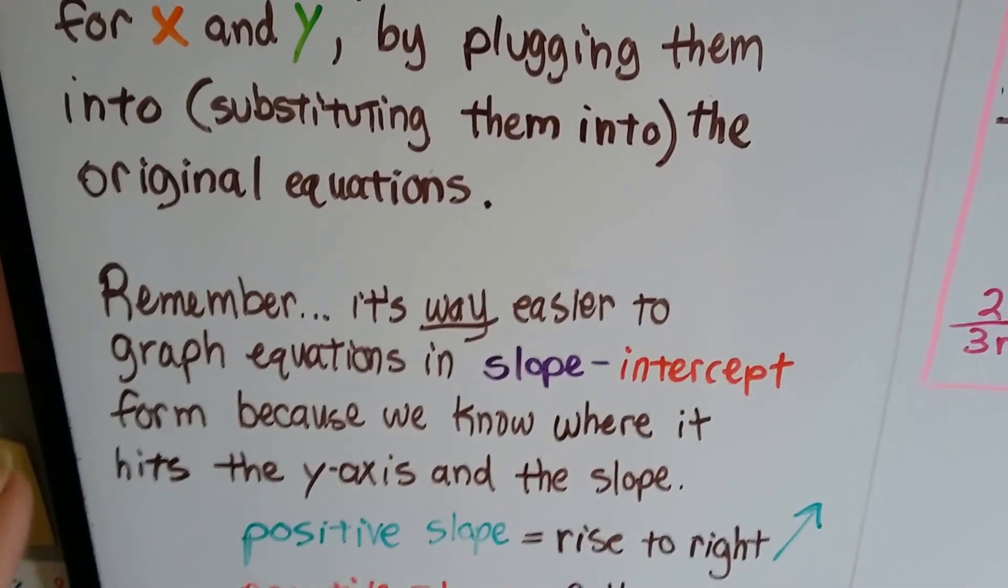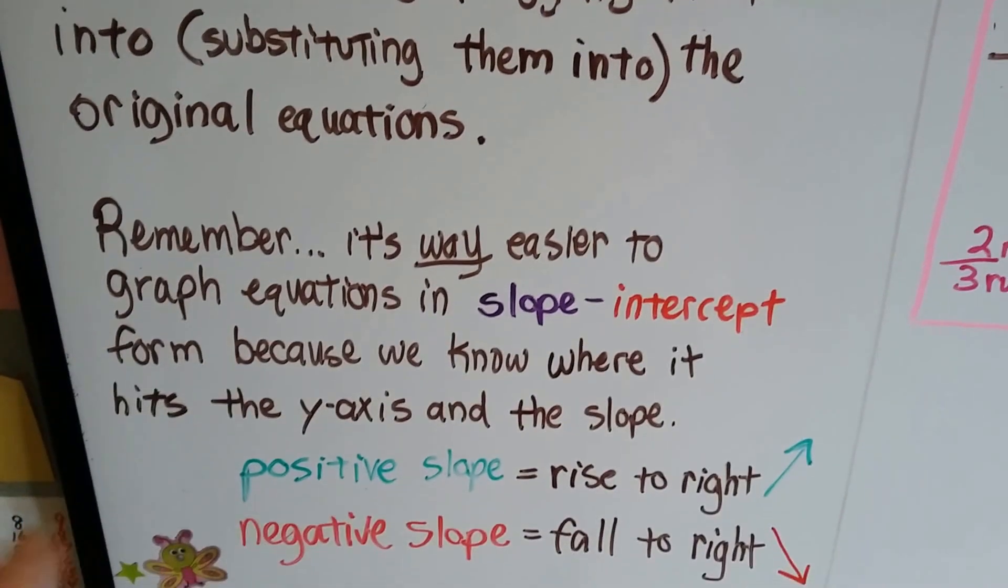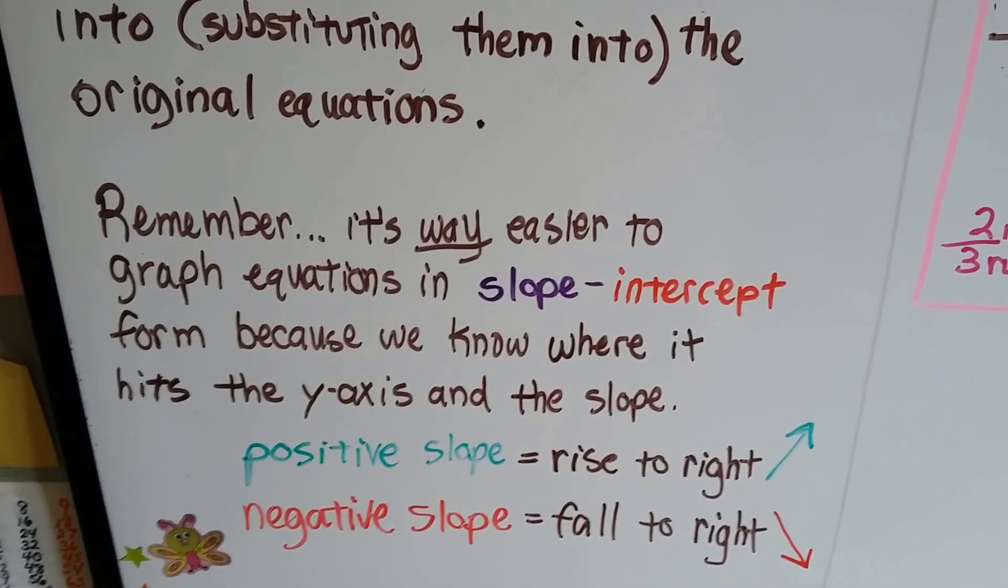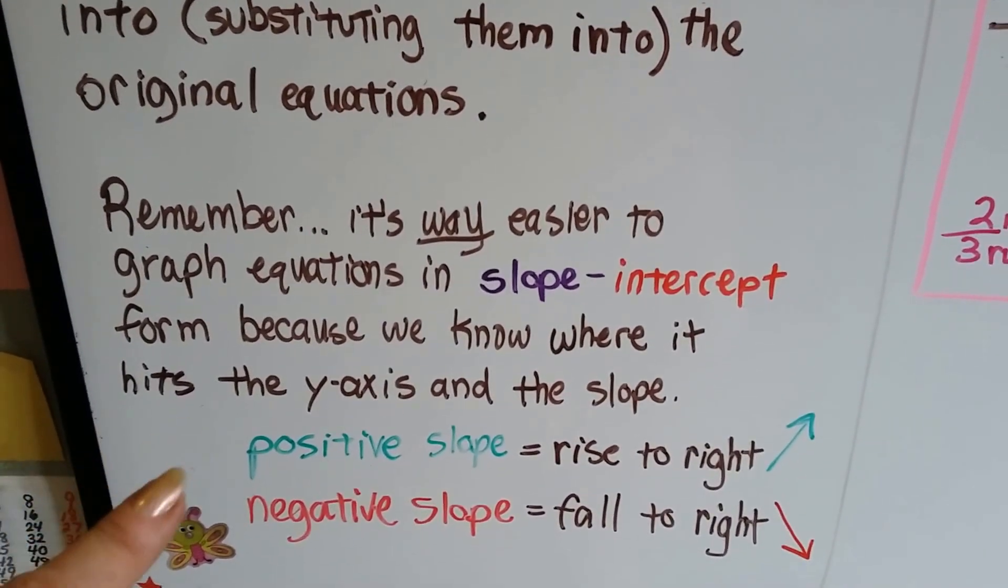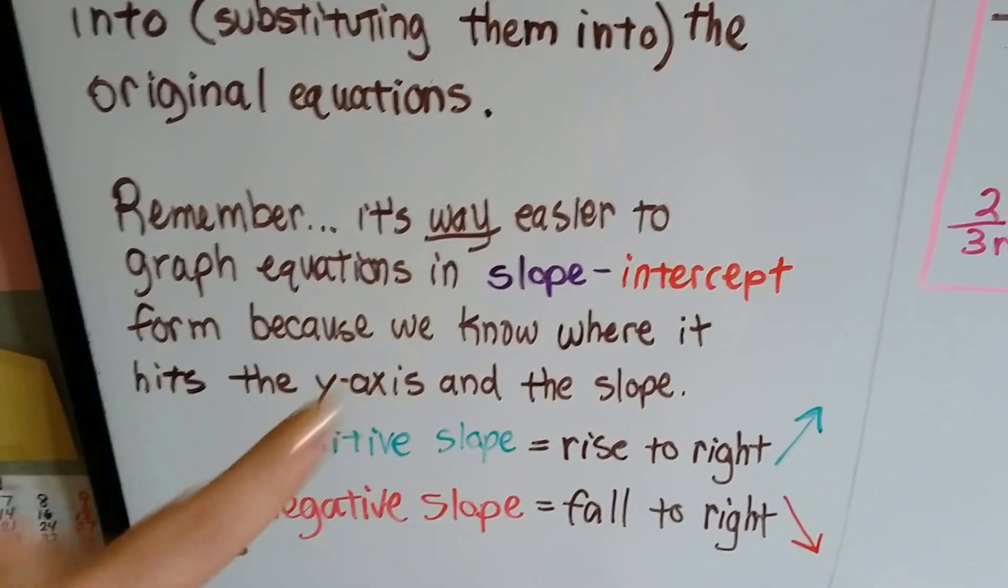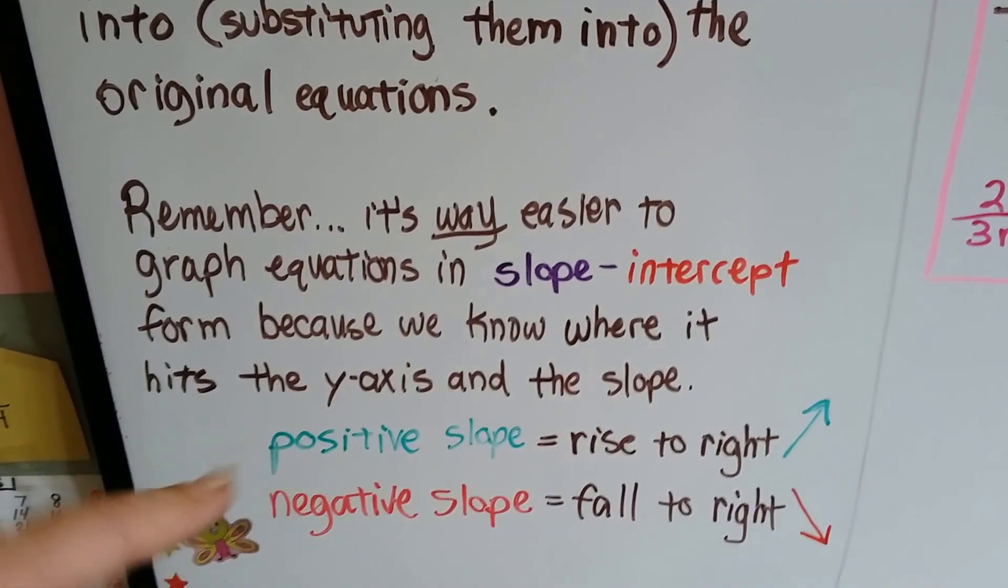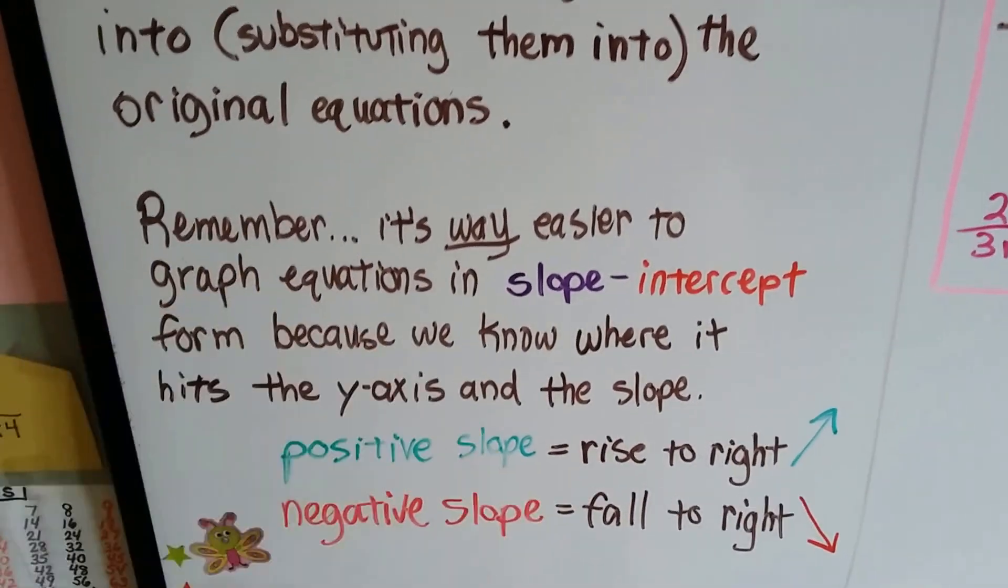Remember, it's way easier to graph equations in slope-intercept form because we know where it hits the y-axis and the slope. A positive slope means the line is going to rise to the right, and a negative slope means it's going to fall to the right.